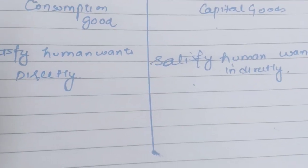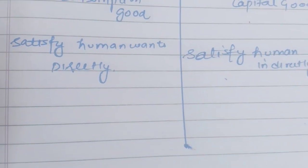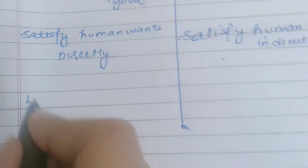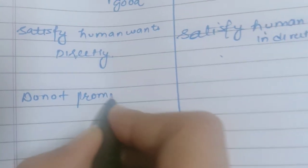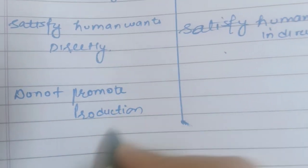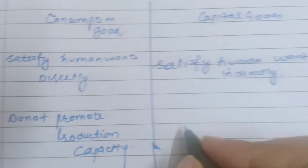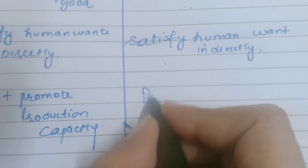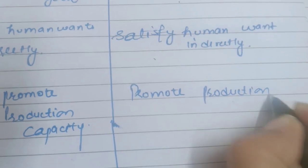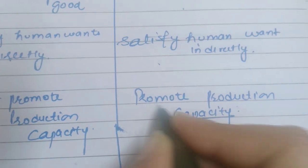Consumption goods are not used in the production process, meaning they do not promote production capacity. But when we use machines — capital goods — they enhance production capacity.